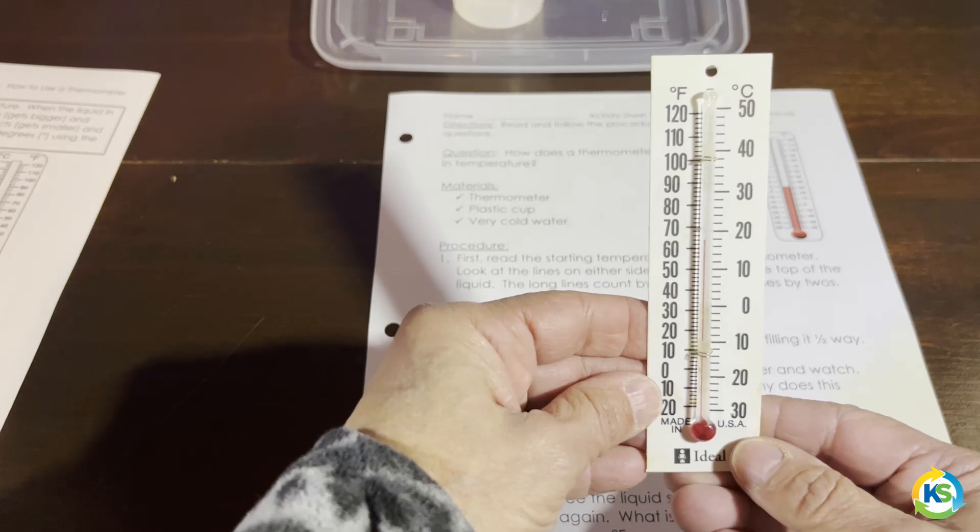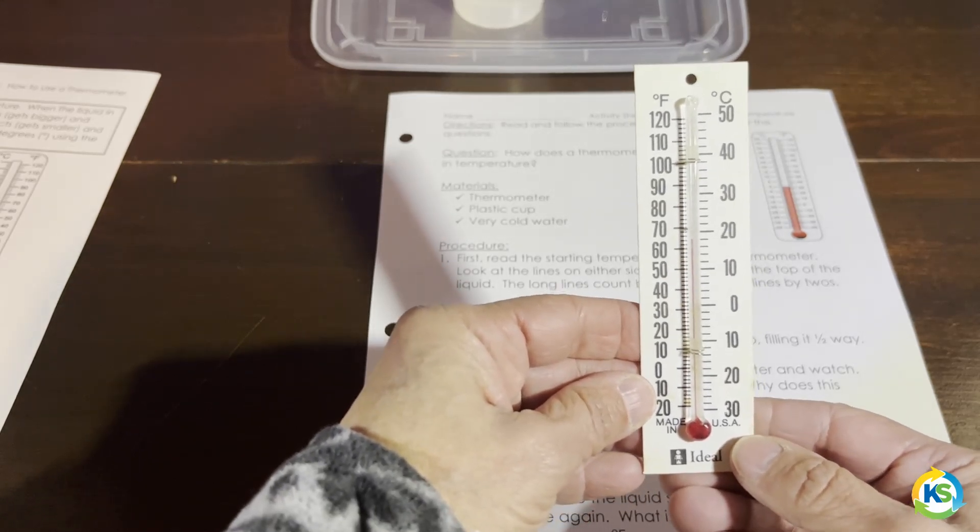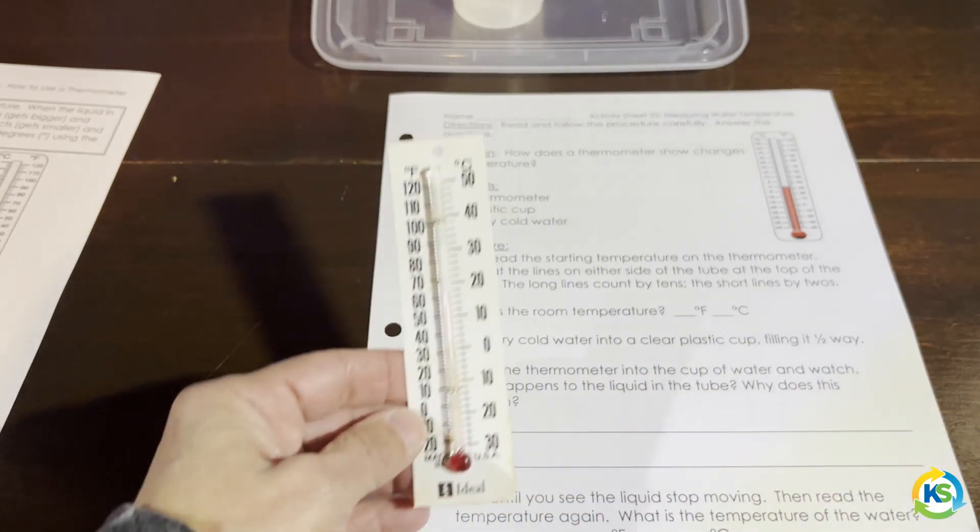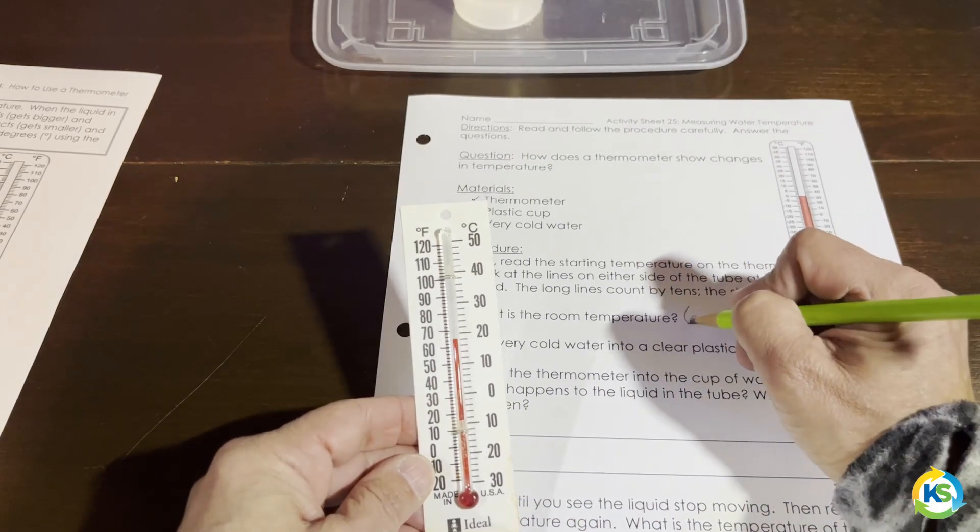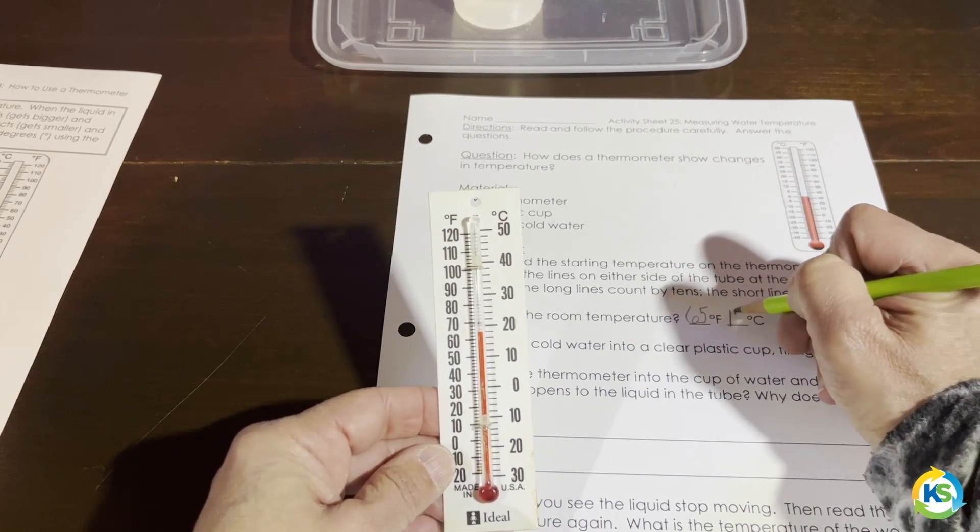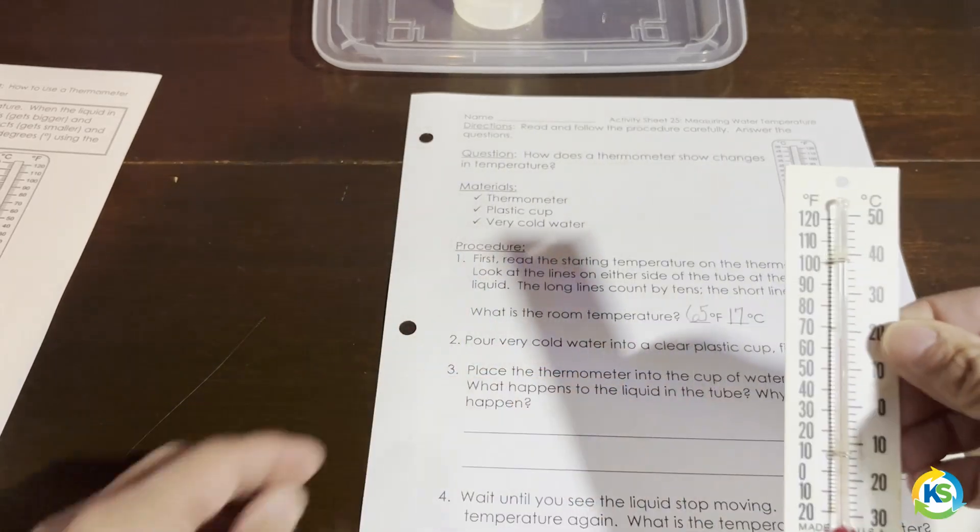Different student thermometers are scaled differently. This one reads approximately 65 degrees Fahrenheit, which is about 17 degrees Celsius. So that's the starting temperature.